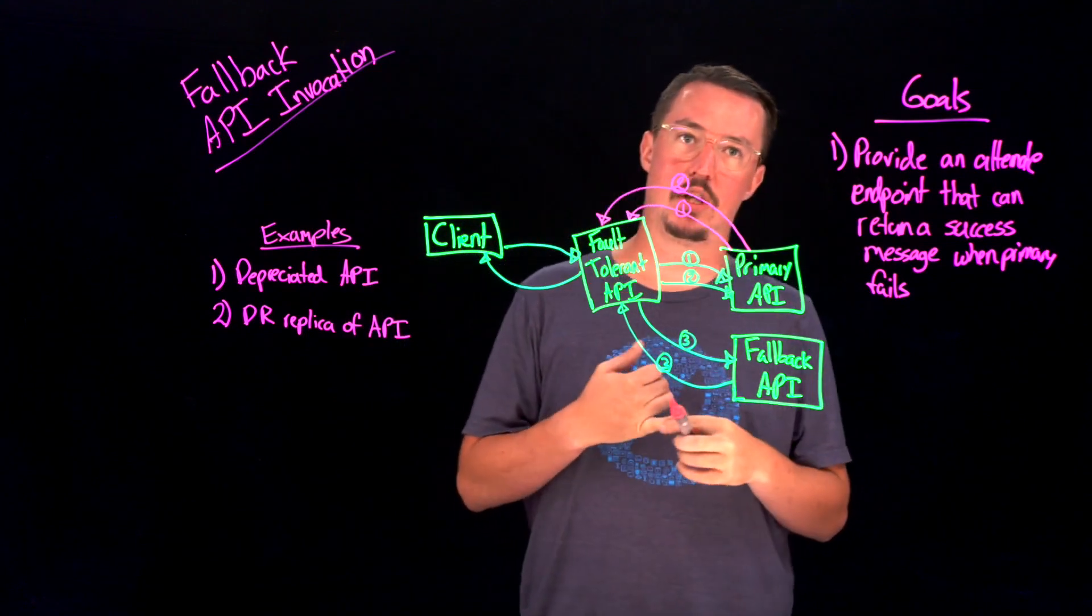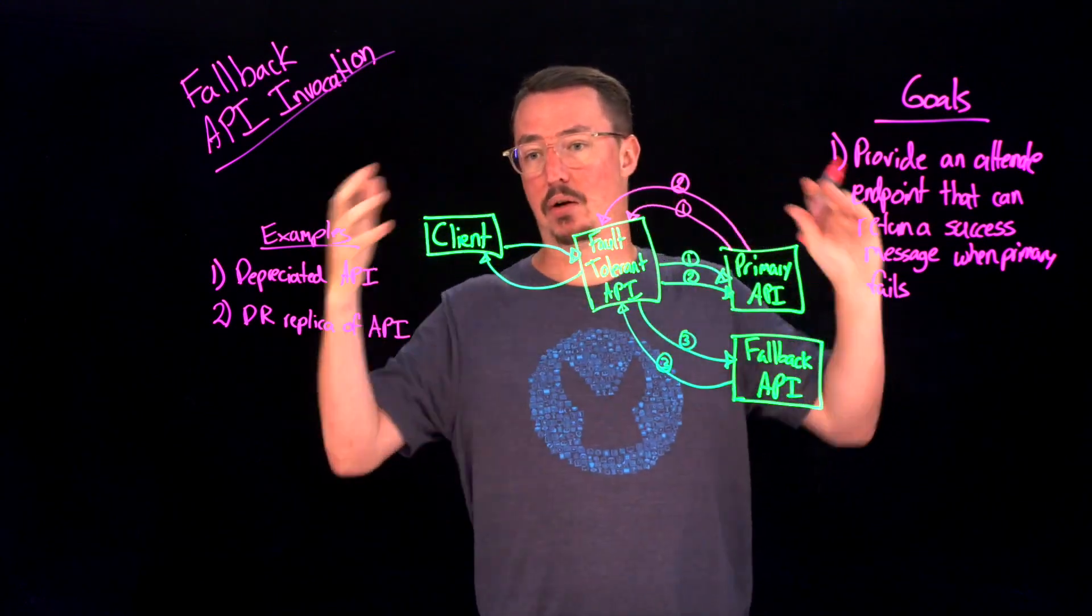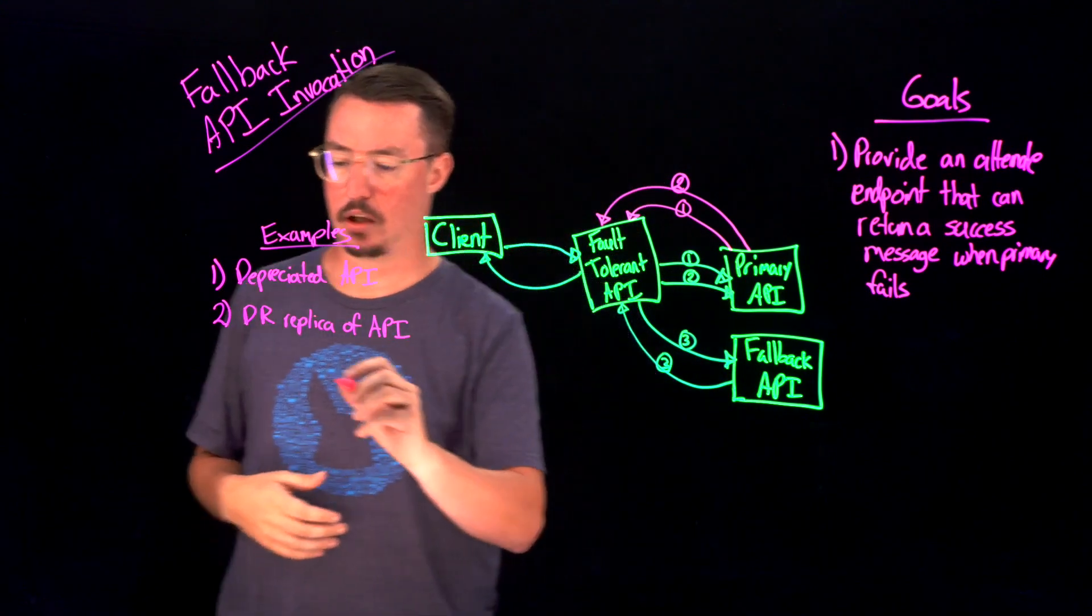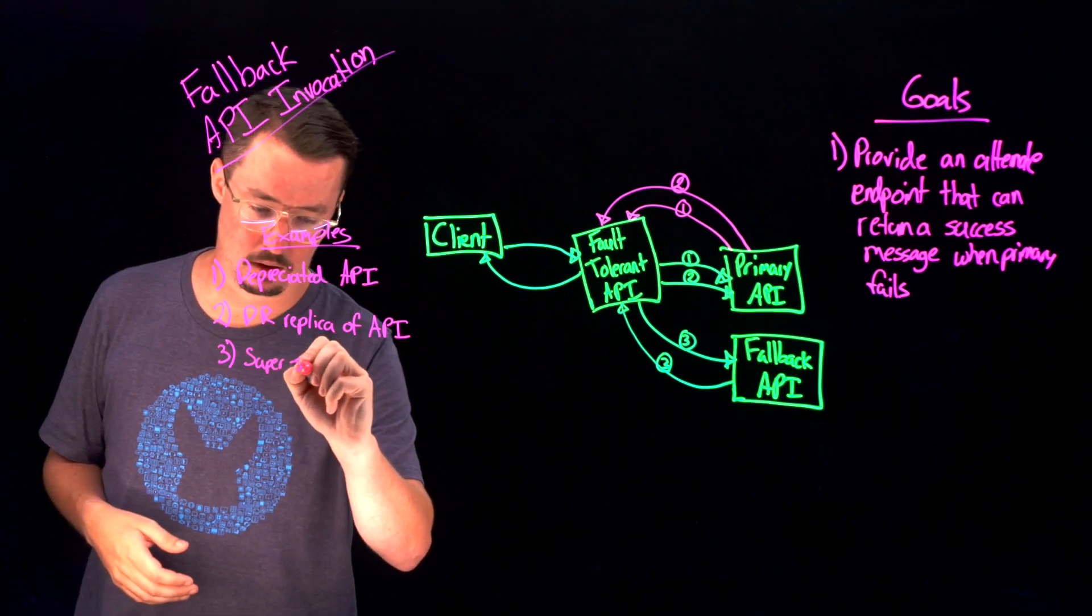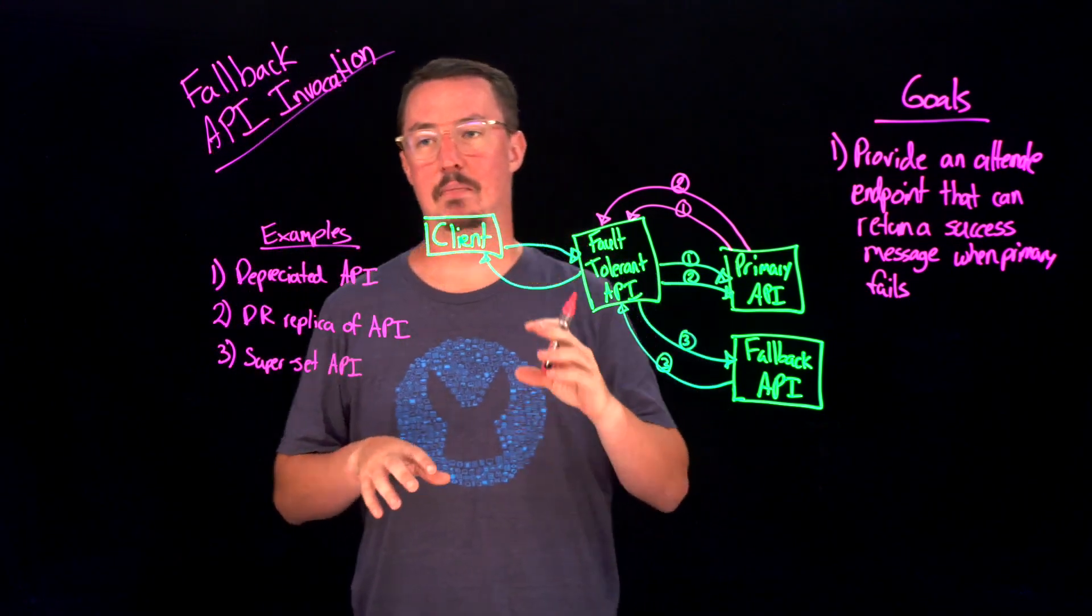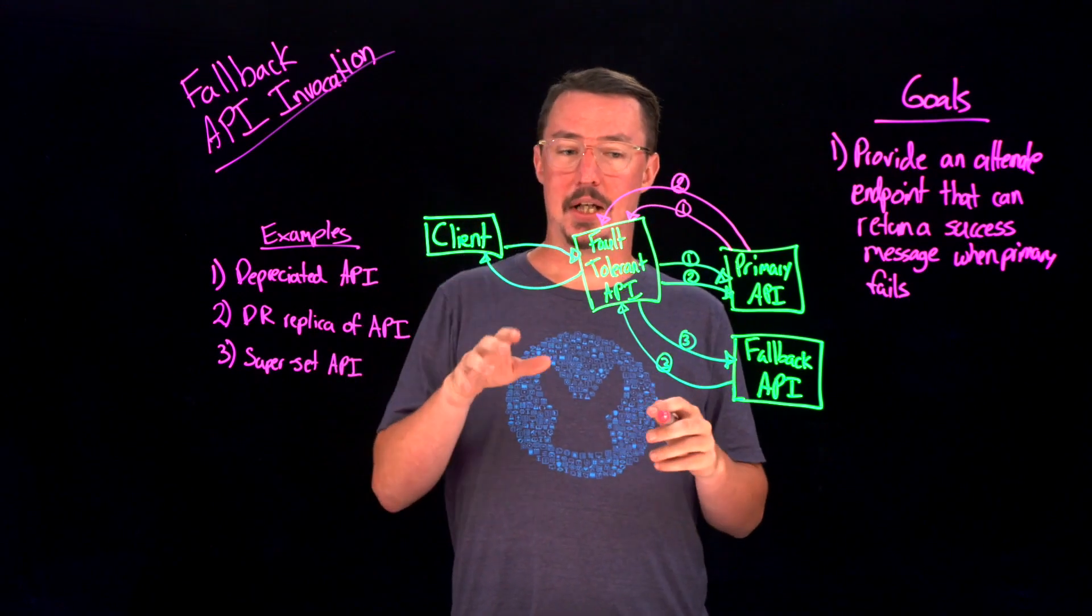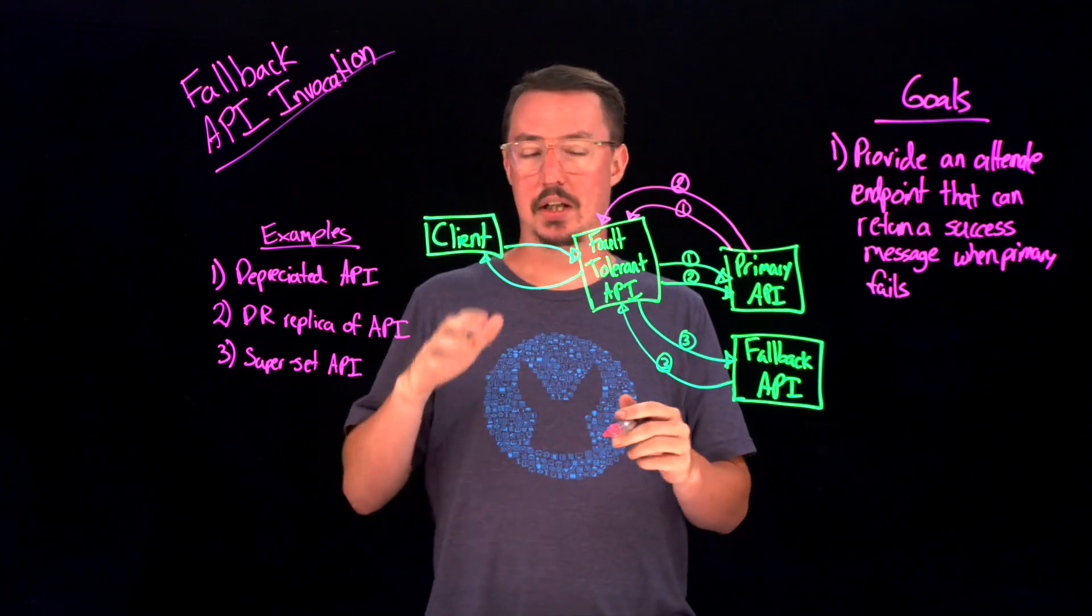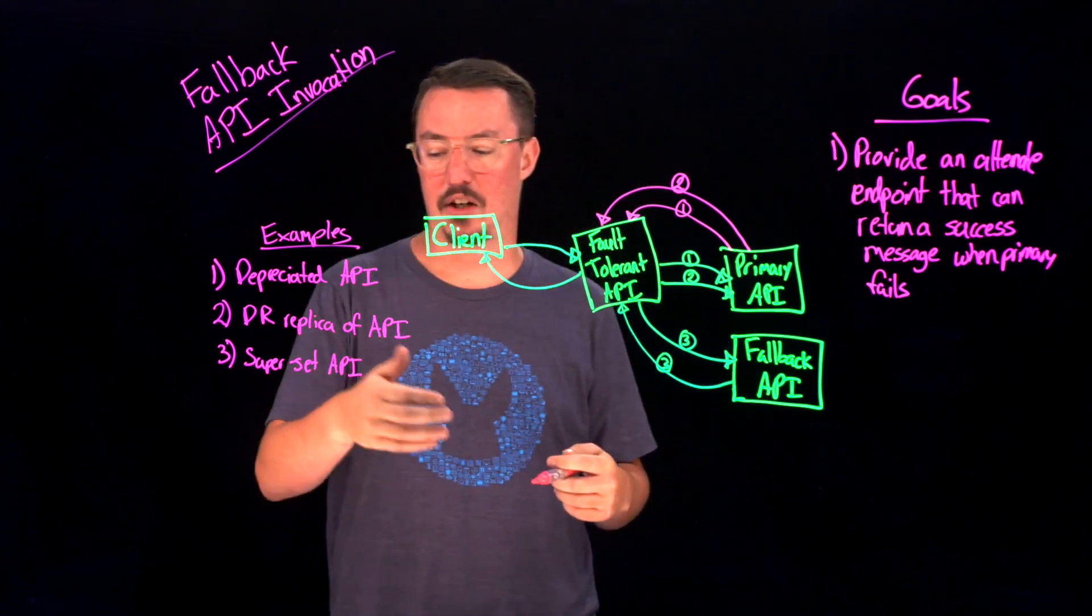The third one would be, say for instance, we were to have an API that does everything that our primary API does, but it returns back even more. And we're able to maybe filter off some of the extra results that we get back. We could consider this a superset API. And then the last piece that maybe isn't going to be the most ideal, but is better than no response at all, would be an API that has less functionality than the first one. Maybe it has some of the fields, but not all of the fields. So the idea here would be we'd be calling a lesser capable API, or maybe we could consider that a subset API.